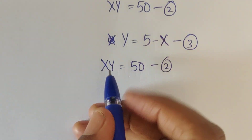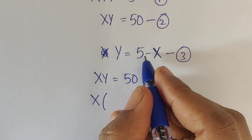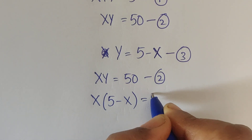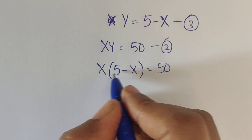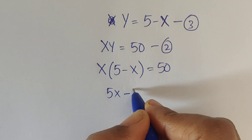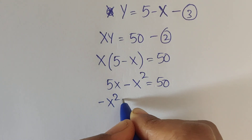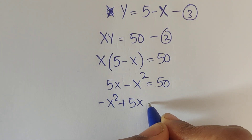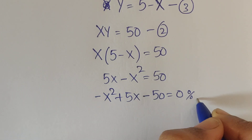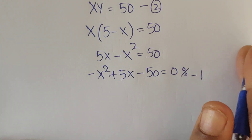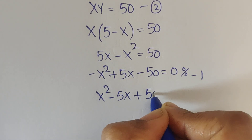Now substitute the value of y from equation 3 into equation 2. So x times (5 minus x) equals 50. Multiplying out gives 5x minus x squared equals 50. Moving terms to the left side: minus x squared plus 5x minus 50 equals 0. Dividing by minus 1 on both sides gives x squared minus 5x plus 50 equals 0.